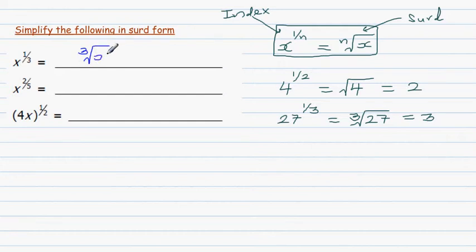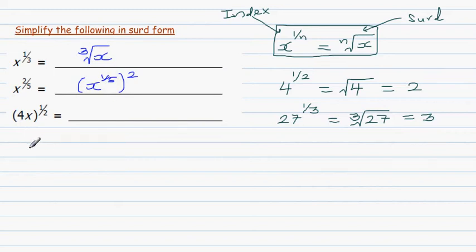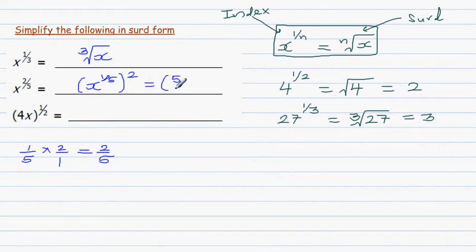There's one more rule. x to the power 2 over 5 is the same as x to the power 1 over 5, raised to 2, because 1 over 5 times 2 equals 2 over 5. And x to the power 1 over 5 is the fifth root of x, so this becomes the fifth root of x, to the power 2.